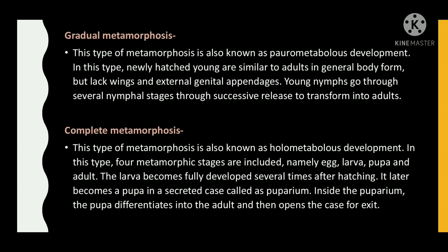Gradual metamorphosis: this type is also known as paurometabolous development. In this type, newly hatched young are similar to adults in general body form but lack wings and external genital appendages. Young nymphs go through several nymphal stages through successive molts to transform into adults.